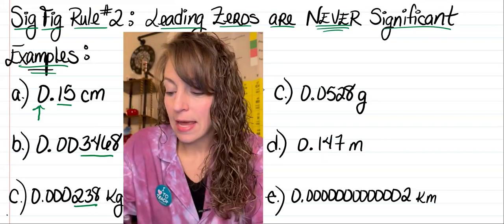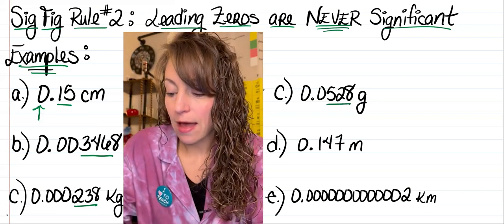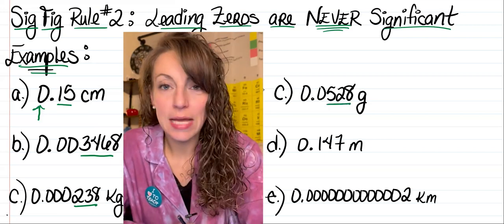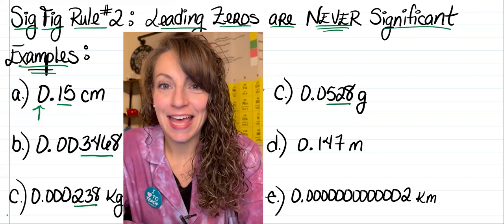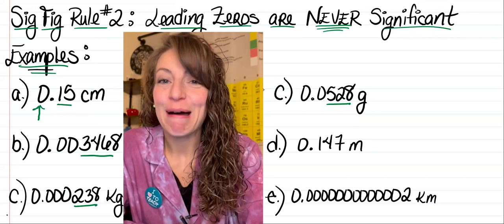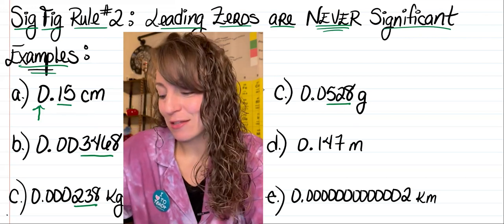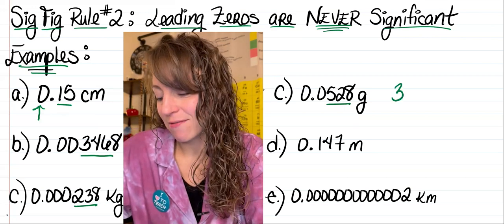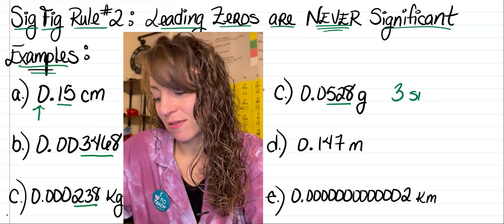In another part of letter C, there are two leading zeros which we're going to ignore, and the five, the two, and the eight in that measurement are significant. So once again we've got three sig figs.